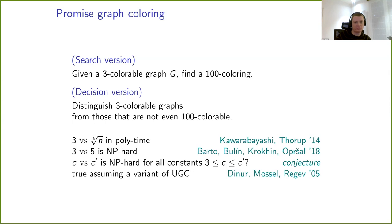The best we know for polynomial time algorithms is that we can do this for 3 versus the 5th root of n in polynomial time, and that's really the best polynomial time algorithm we know. As for hardness, the best we know is 3 versus 5. If you look at 3-colorings, the loosest thing we still know is NP-hard is 3 versus 5. So there's a huge gap between those two results.